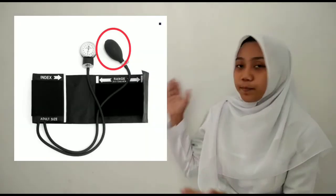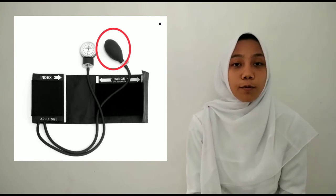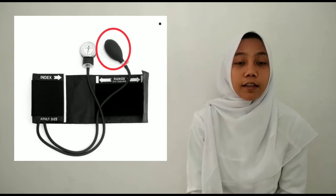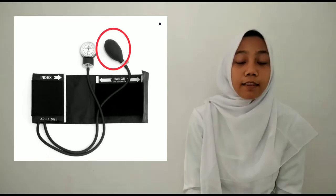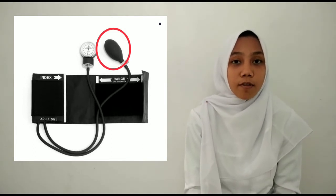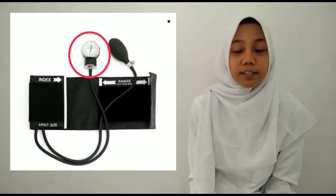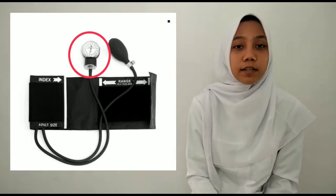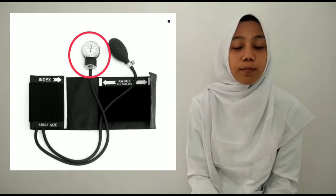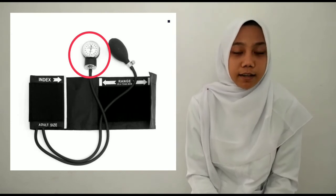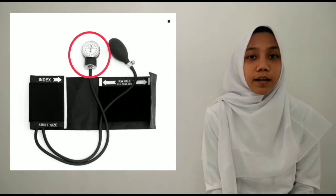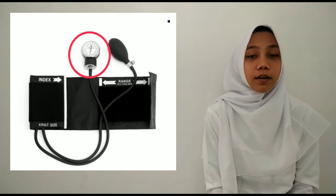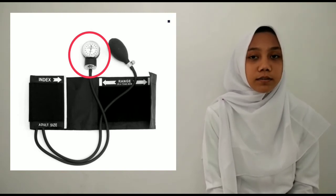The first part is the pump, which functions to pump air into the cuff. At the end, there is a pressure release from the cuff. The second is the manometer. The manometer is a part of the tensimeter that measures the pressure of the air inside, and its movement is like a clockwork to measure the air pressure in the cuff.